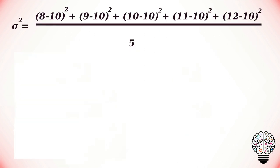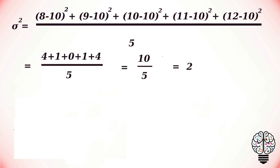Now let's find the variance of the second data set. Taking each data point, subtracting the mean, and squaring it following the same pattern. When the calculations are done, we get 2 as the variance of the second data set. From these two data sets, we can find that the variance of a less dispersed data set is smaller.